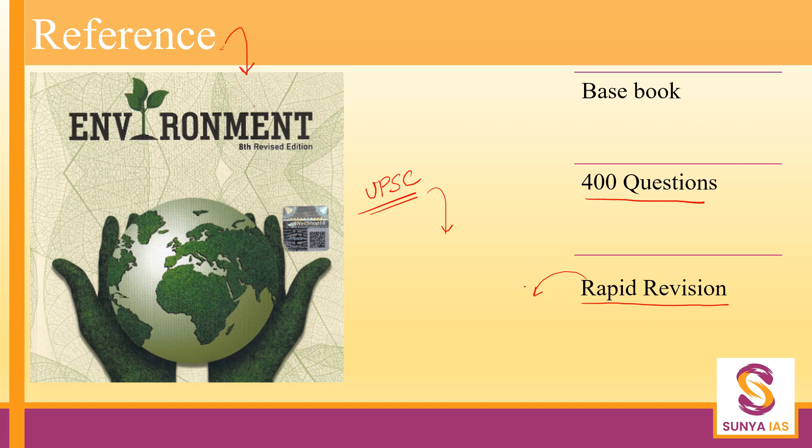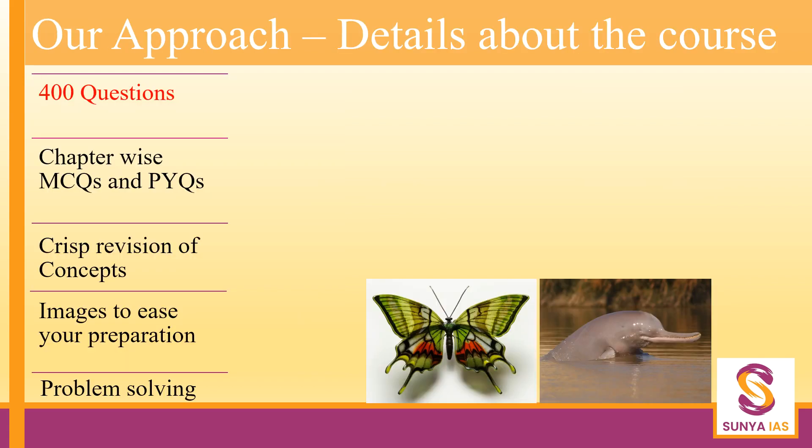By rapid revision, what do I mean? When you are reading and solving questions on a topic, your overall understanding increases a lot. This is the basic motto and objective of this course. To quickly summarize the key details: we are going to solve 400 questions with chapter-wise segregation, and I will also include a few previous year questions so that the moment you finish a chapter, you will have practiced both new and past questions.